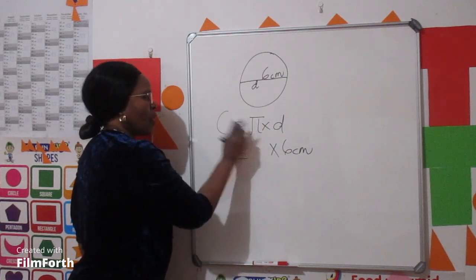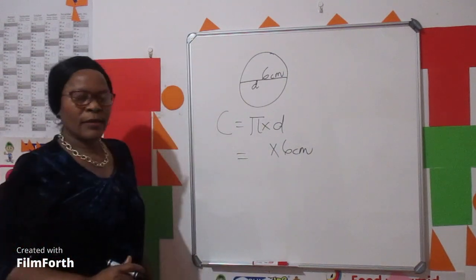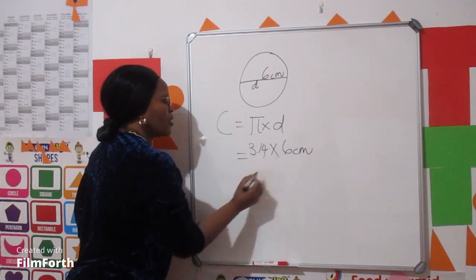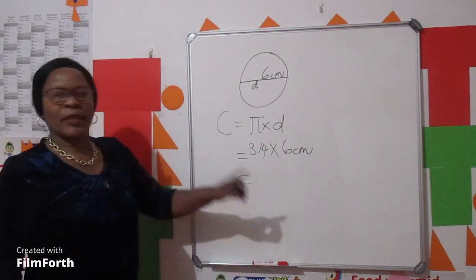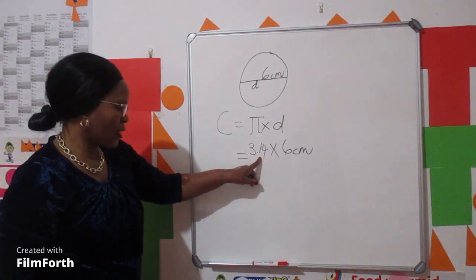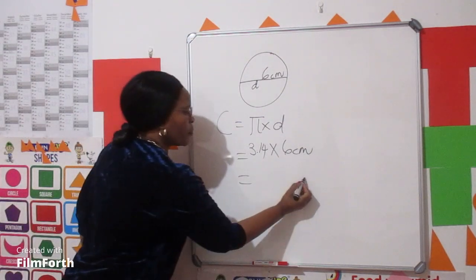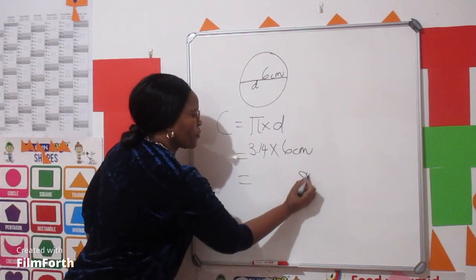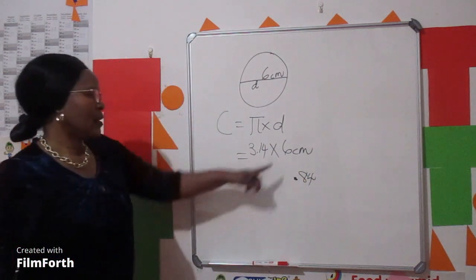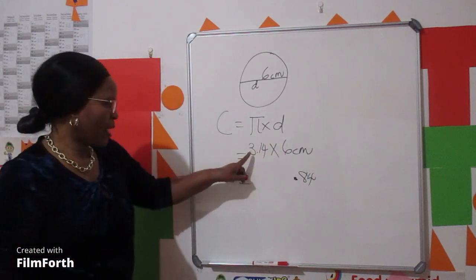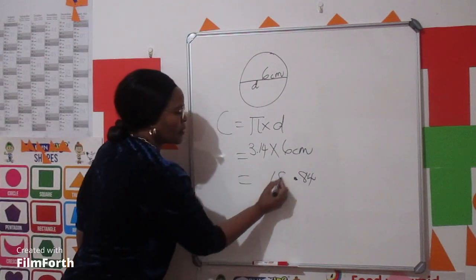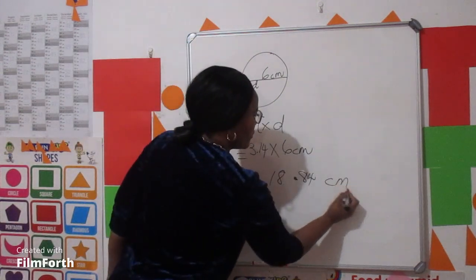Our pi is 3.14. Let's multiply: 6 multiplied by 14 is 84, and 6 multiplied by 3 is 18. Therefore C is 18.84 centimeters.